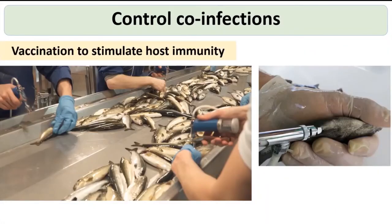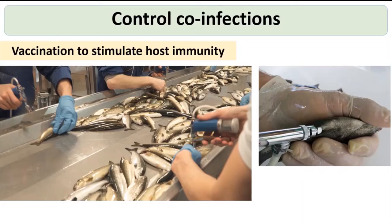Vaccines are available for some species like salmon, tilapia, and trout. Vaccines stimulate specific immunity to a disease, and importantly, if you reduce the pressure of one disease on the host, it becomes harder for co-infections to establish. Identifying important vaccines for a particular species will help, and vaccines can also help eliminate losses from co-infections.